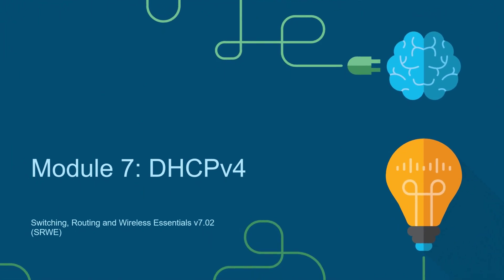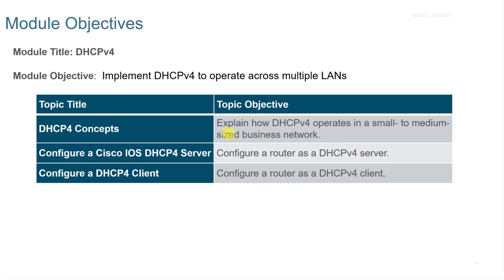This video accompanies the Cisco Netacad Switching, Routing, and Wireless Essentials course. It covers Module 7, DHCPv4. In this video there are three objectives: DHCPv4 concepts, configuring a Cisco IOS DHCPv4 server, and configuring a DHCPv4 client.